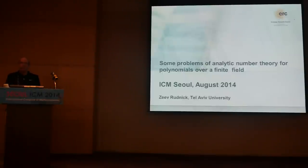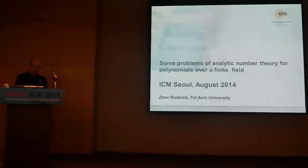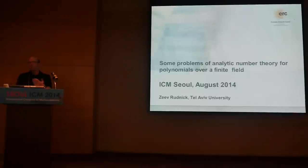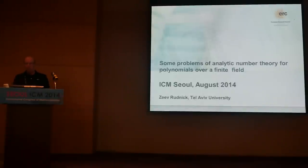What I want to speak about here is related to both the talks we heard earlier in the session — both analytic and very algebraic structures. It's an attempt I've been making the last few years to understand connections between classical problems in analytic number theory and corresponding problems for polynomials over a function field. There are surprising connections, and some ways to go from one theory to the other and conversely. I want to discuss one specific such problem.